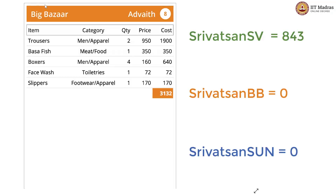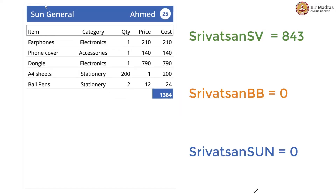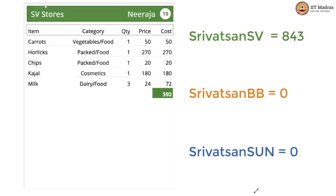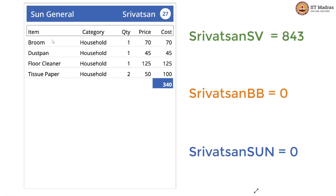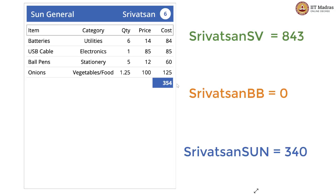Going forward: Adved, Julia, Ahmed, Rajesh, Neeraja — then Srivatsan again, but now in Sun General. In Sun General, Srivatsan spent 340 rupees. So now we increase this variable to 340 from 0. And then we go forward — there is one more Sun General entry and we had 340 earlier. Now we add 354 to this variable, so we will have 694 rupees spent by Srivatsan in Sun General.